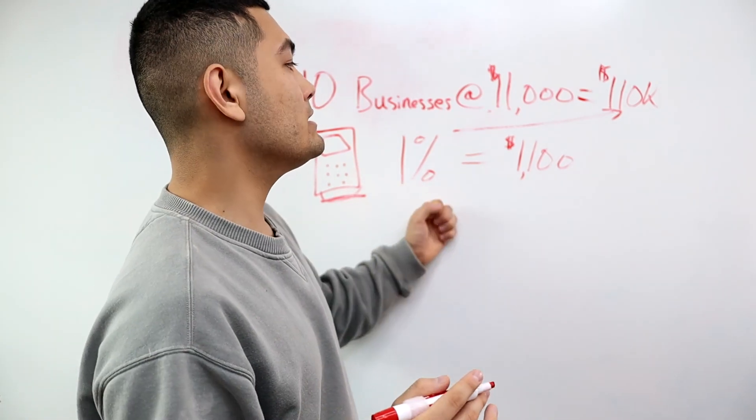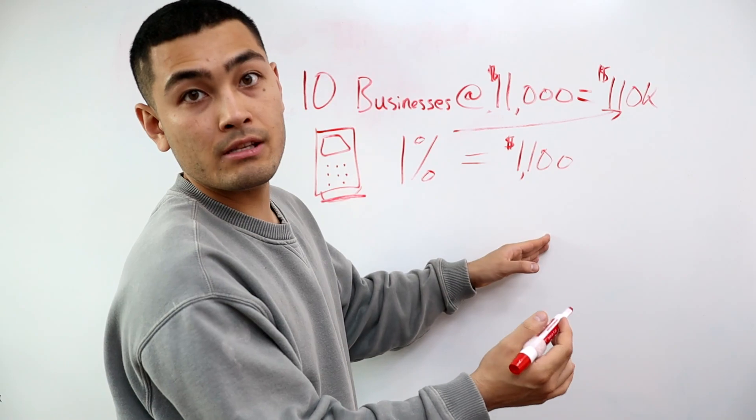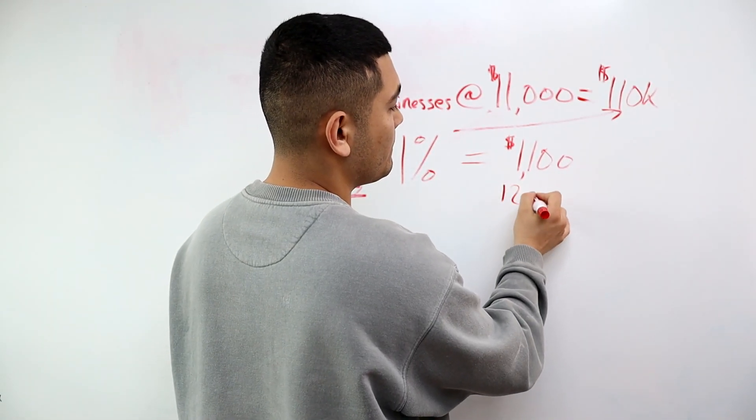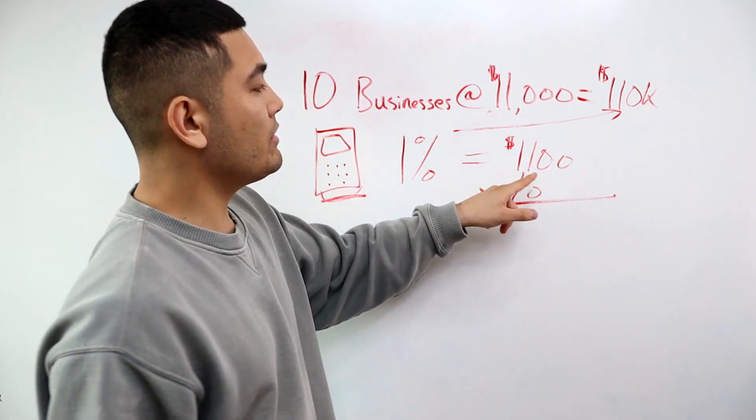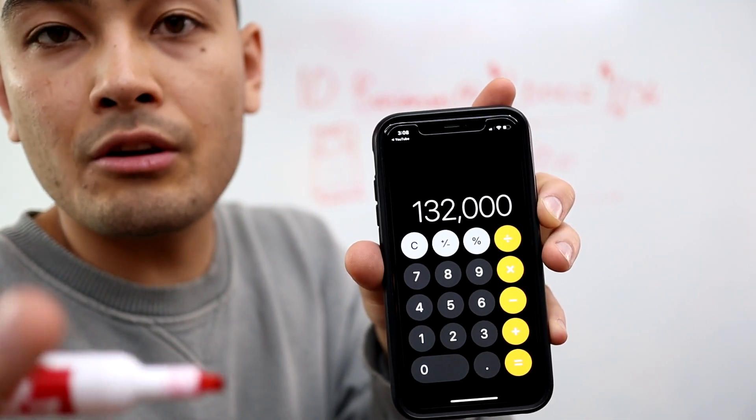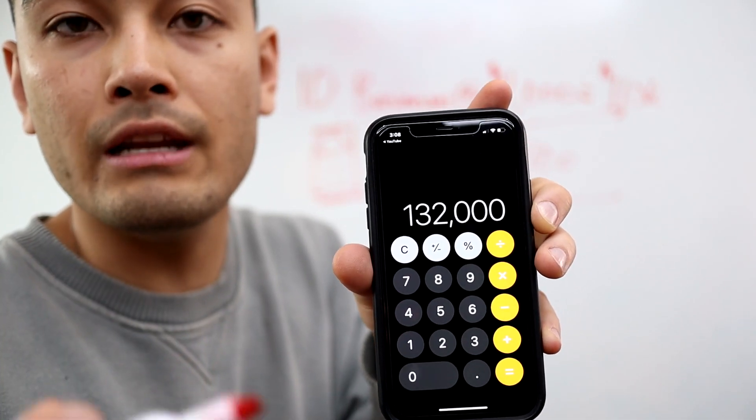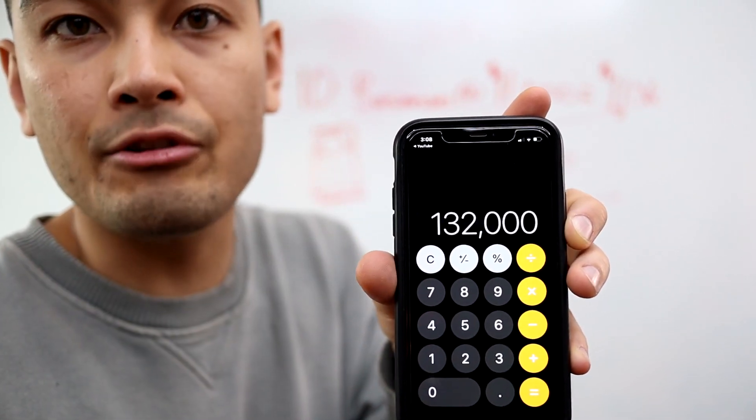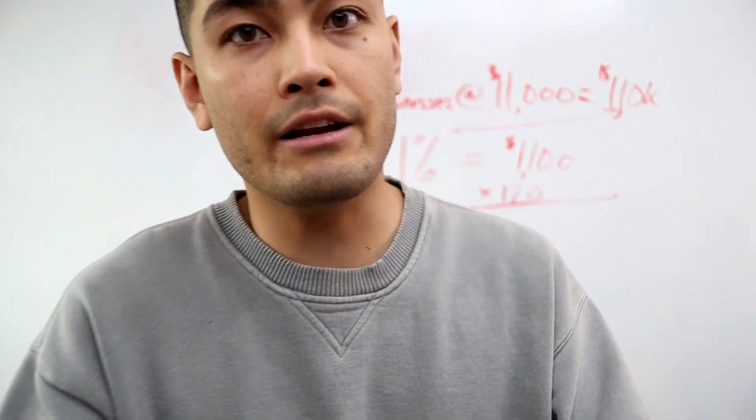So imagine what happens if those business owners use your reader for say 10 years. Ten years times 12 months is 120. So then you do the math on this: $1,100 times 120 months. If you get those business owners set up and they do a total of $1,100 per month in profit residual income, this is the money you're going to make over a 10 year span. You're going to make $132,000 if they stay with you for 10 years.